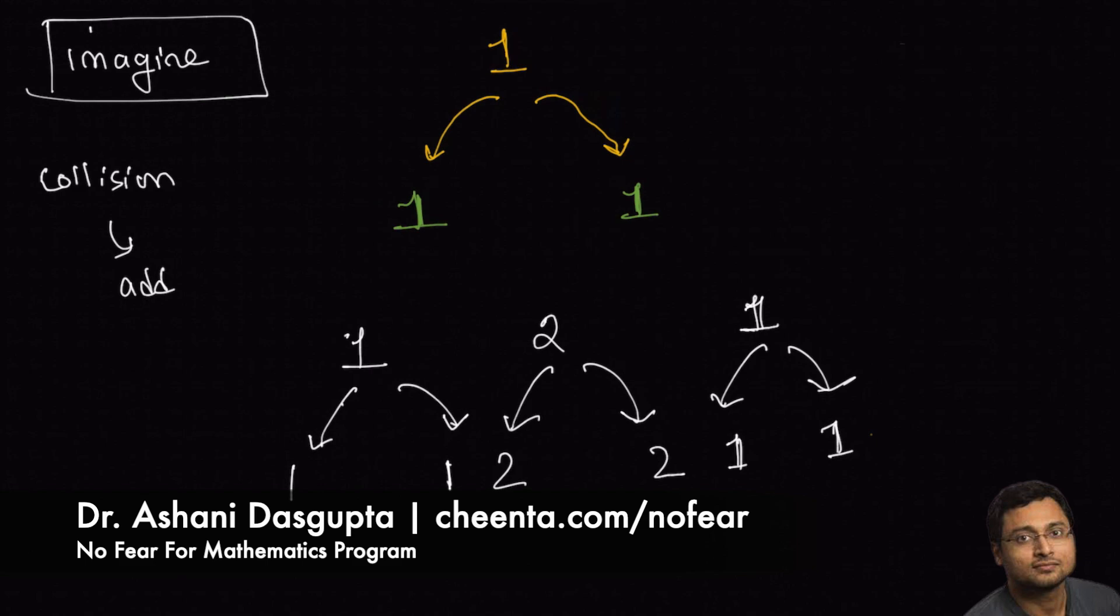One, three, three, one. Now whenever we have a collision, we again add. So in this way, we get the regular Pascal's triangle below: 1, 1, 1, 1, 2, 1, 1, 3, 3, 1, and so on.